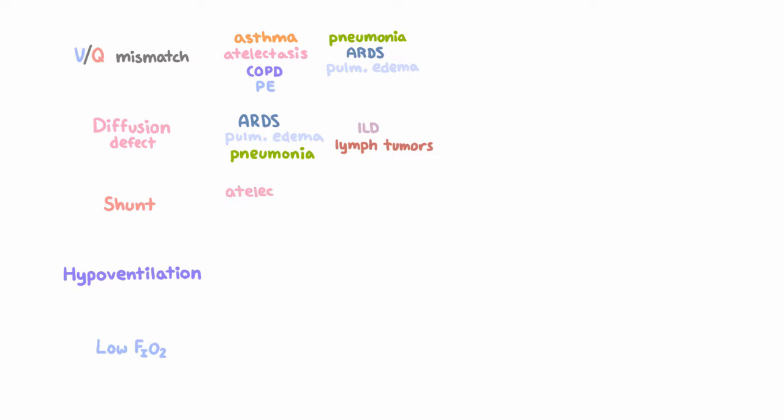Causes of shunt include atelectasis, ARDS again, pneumonia again, pulmonary edema again, the hepatopulmonary syndrome, pneumothorax, and vasodilators in some patients with alveolar infiltrates, including nitrates and calcium channel blockers.